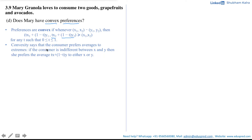In simple terms, convexity says that the consumer prefers averages to the extremes. So if the consumer is indifferent between x and y, then she prefers the weighted average bundle tx + (1−t)y to either x or y.